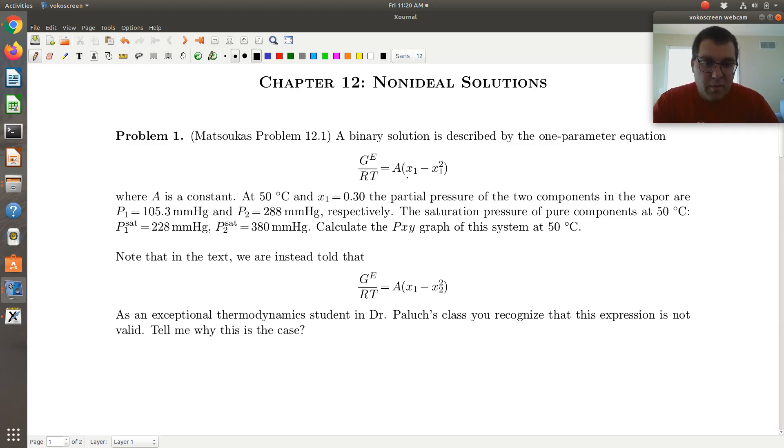Okay, and I'm going to point that out. So this is x1 minus x1 squared. This would be equivalent to a times x1 times 1 minus x1, which is equivalent to a x1 x2. And I point that out because if you look at our screencast on getting analytic expressions for activity coefficients from GE models, this is exactly the expression we looked at.